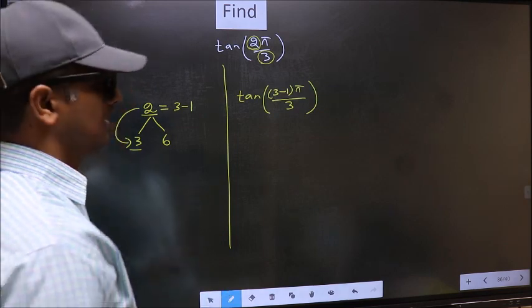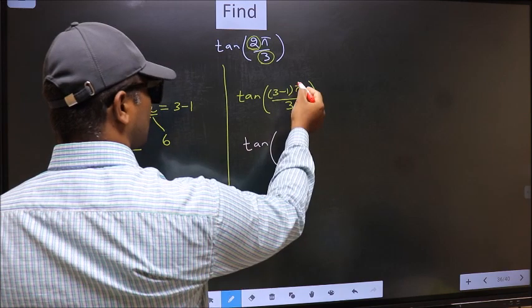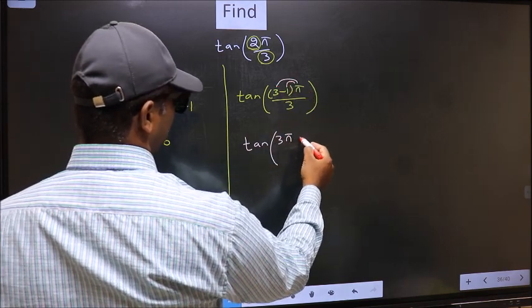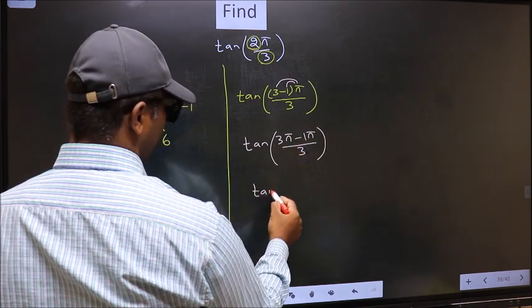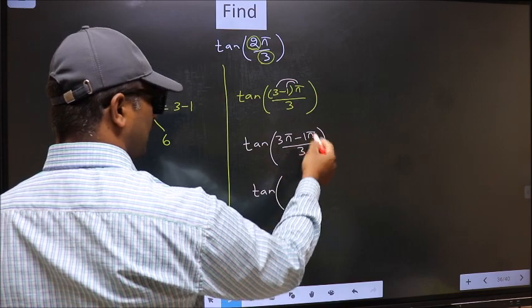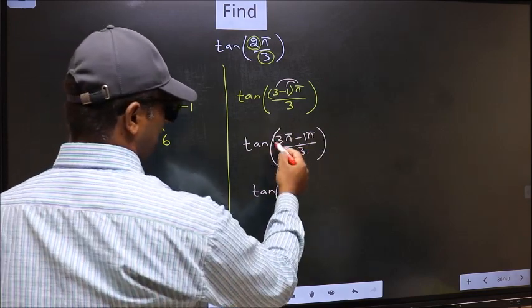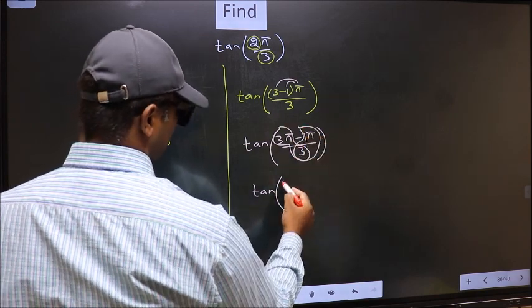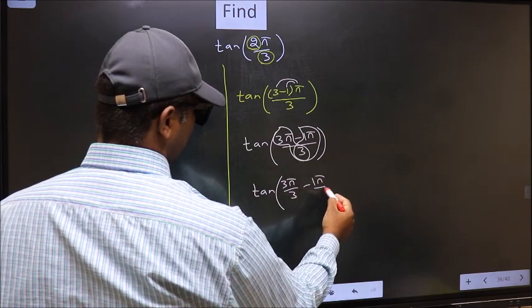Next. Tan. Now you should open the brackets. You get 3π minus 1π by 3. Now, tan. Over here, you should split the denominator in this way. That is 3π/3 minus 1π/3.